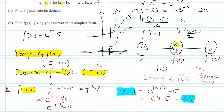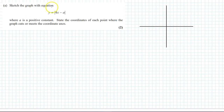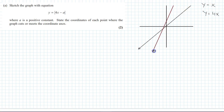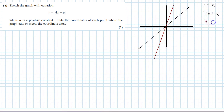So fg(3) = 59. Now let's sketch the graph with equation y = |4x - a|. First draw y = x, then y = 4x. The graph of y = 4x is steeper.